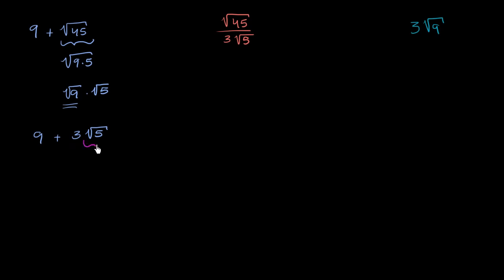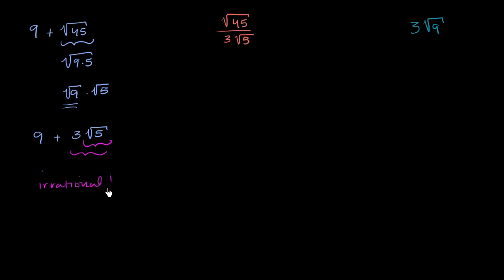The square root of 5 is irrational — you're taking the square root of a non-perfect square, so that's irrational. 3 is rational, but the product of a rational and an irrational is still going to be irrational. And then you're adding 9, a rational number, to it. When you add a rational to an irrational, you still get an irrational. So this whole thing is irrational.